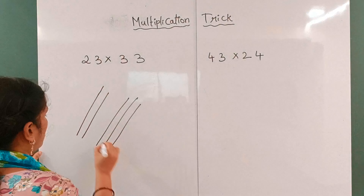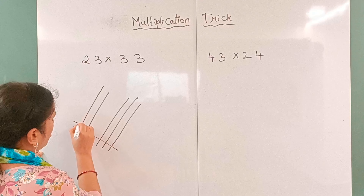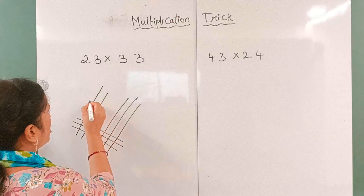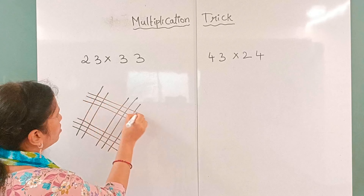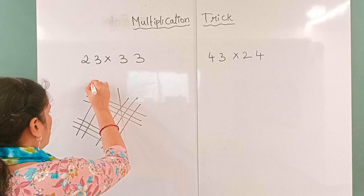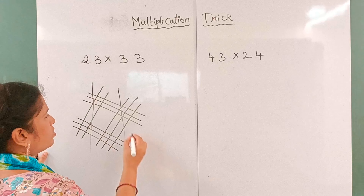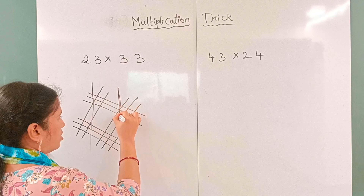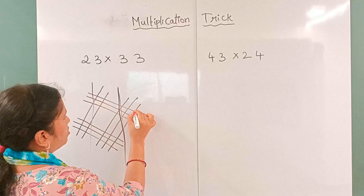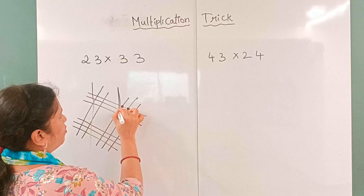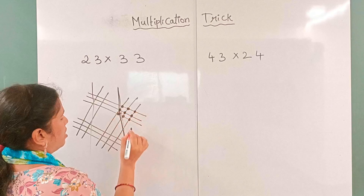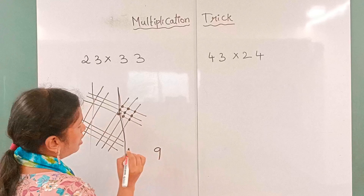First, we have three lines: 1, 2, 3. Next again three lines: 1, 2, 3. Then two lines: 1, 2, 3. So we have divided. Counting intersections: 1, 2, 3, 4, 5, 6, 7, 8, 9. Nine in each place.